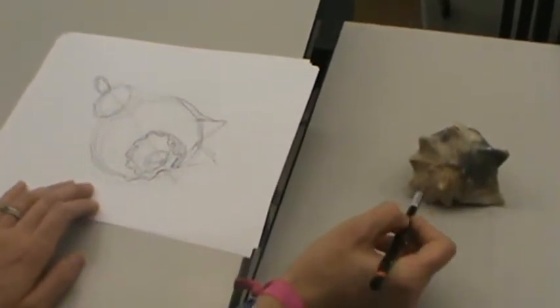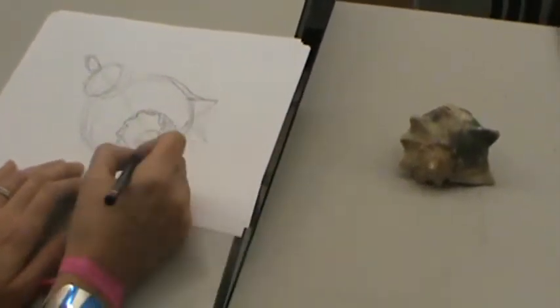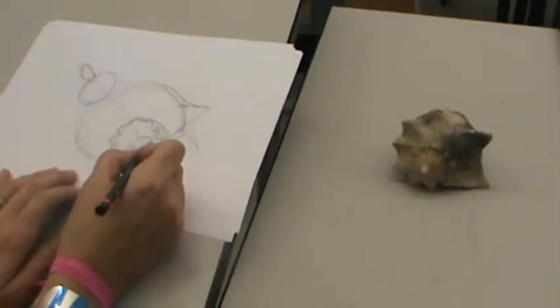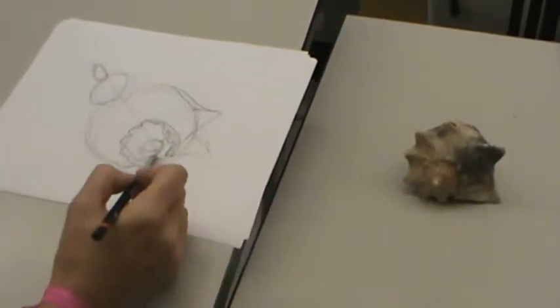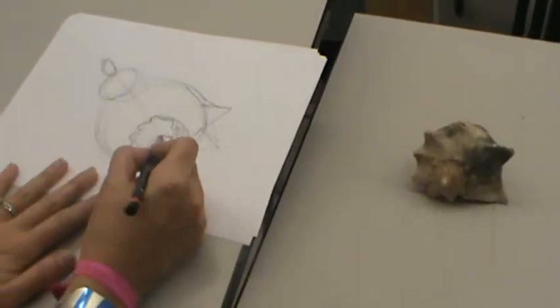I set up this way so I can have some foreshortening in depth. Some of these little spikes on this ridge back here, I can't see so clearly. They're almost hidden by the point. That's okay.